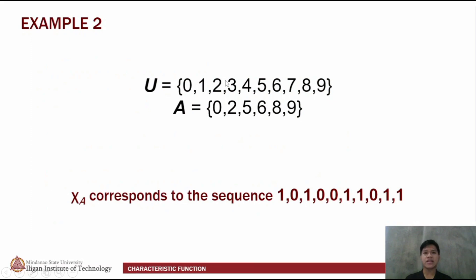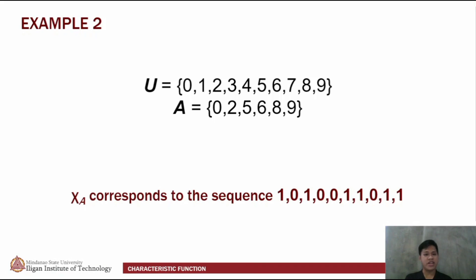For the last example, let U be a set containing the integers from 0 to 9, and set A containing the elements 0, 2, 5, 6, 8, and 9. The characteristic function for this corresponds to the sequence 1, 0, 1, 0, 0, 1, 1, 0, 1, and 1, since the integers present in set A are 0, 2, 5, 6, 8, and 9. Now, for the properties, let's have Anton Jan reporting.